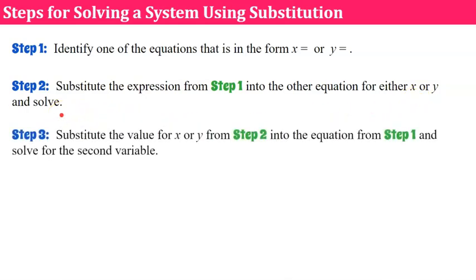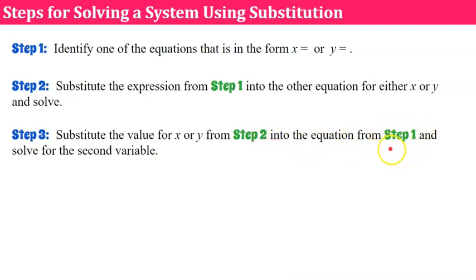Step three: we're going to substitute the value for x or y found in step two into the equation from step one and solve for the second variable. So in step two you solve for one variable, and in step three you'll solve for the other. For example, if step two gives you x, then step three gives you y.